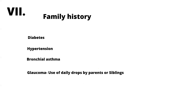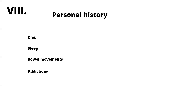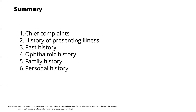Ask about family history of diabetes, hypertension, bronchial asthma, and importantly glaucoma — a person with a family history of glaucoma has a 40% risk of developing glaucoma themselves, so extra caution is warranted. Personal history includes diet, sleep, bowel movements, and addictions to tobacco or alcohol. In summary, for any ophthalmic patient, ask about demographics (summarized in one sentence), chief complaints in chronological order, history of presenting illness, past history, ophthalmic history, family history, and personal history.